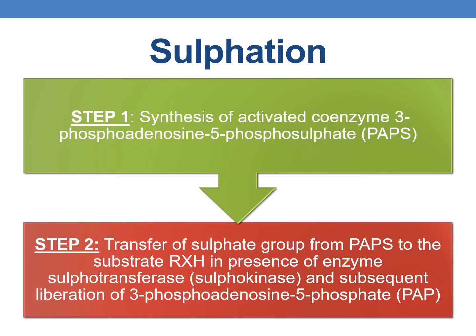The basic sulfation process occurs in two steps. Step one is synthesis of the activated coenzyme 3-phosphoadenosine 5-phosphosulfate (PAPS). Step two is the transfer of the sulfate group from PAPS to the substrate RxH in the presence of the enzyme sulfotransferase or sulfokinase, and subsequent liberation of 3-phosphoadenosine 5-phosphate.